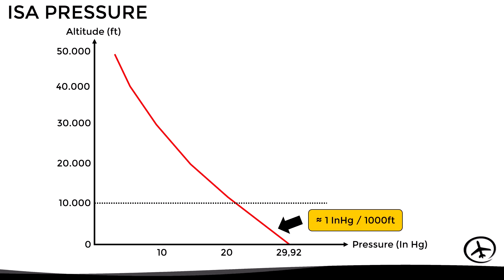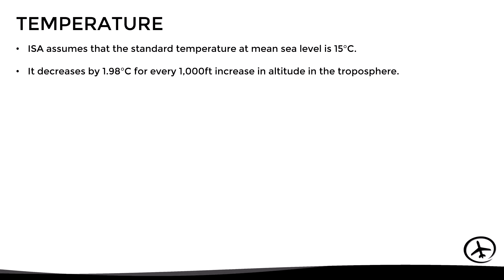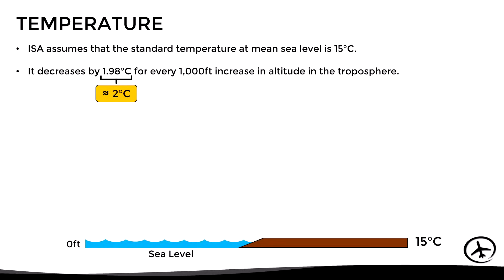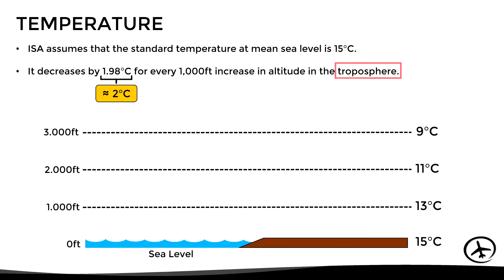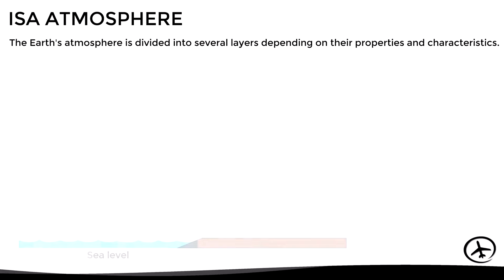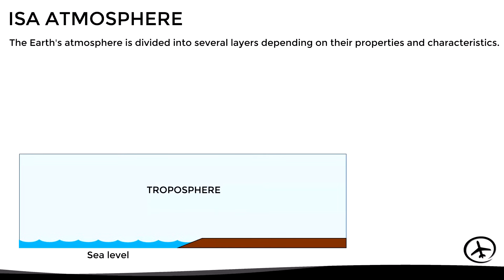Now that we have seen how pressure behaves, let's take a look at the temperature in the ISA model. The temperature is assumed to be 15 degrees Celsius at sea level, and it is reduced by 1.98 degrees Celsius for each 1000 feet of altitude increase within the troposphere, which can be rounded up to 2 degrees Celsius per 1000 feet. This means that under standard conditions at sea level we would have 15 degrees Celsius, at 1000 feet 13 degrees, at 2000 feet 11 degrees, and so on. This rate of temperature reduction with altitude applies only within the troposphere. The first layer we find right above the surface is known as the troposphere, and under standard conditions within this layer, the temperature decreases by 2 degrees Celsius per 1000 feet until reaching an altitude of 36,089 feet.